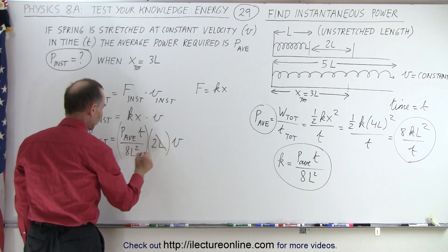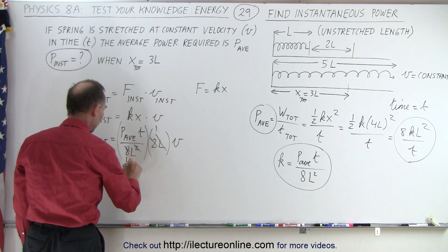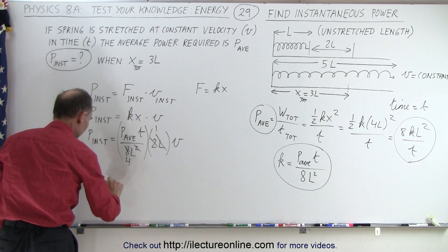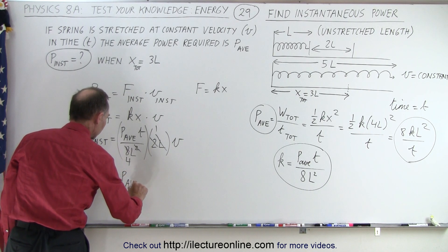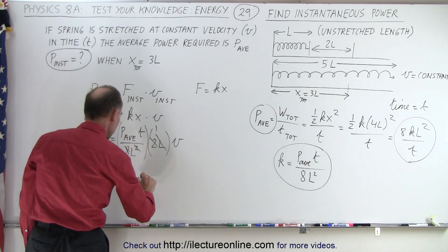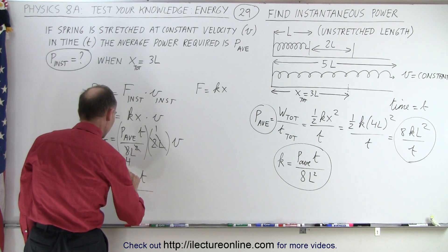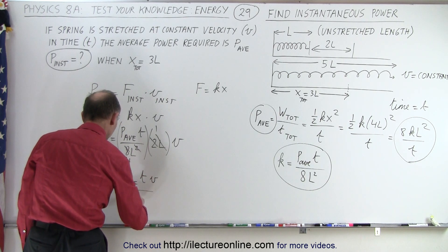Now this L will cancel out this L, and this 2 will cancel out this 8 becomes a 4. That means the instantaneous power is going to be equal to the average power times T times V divided by 4L.